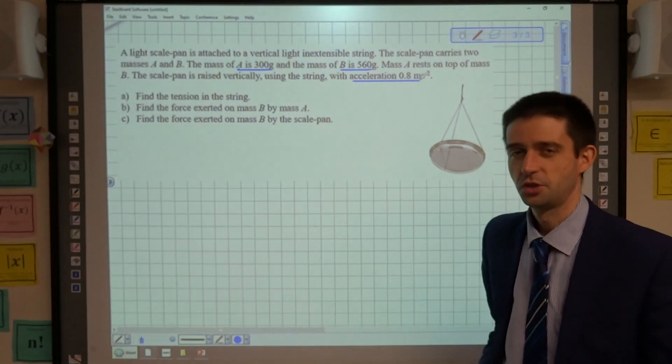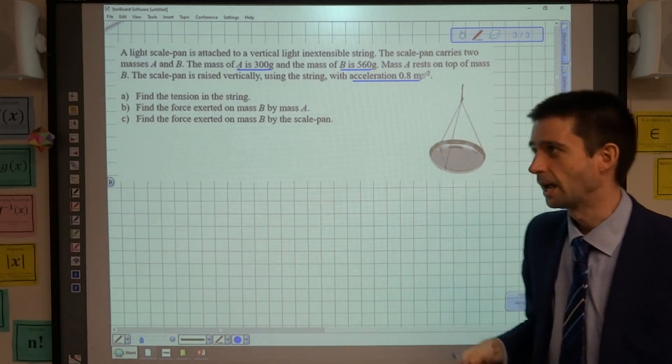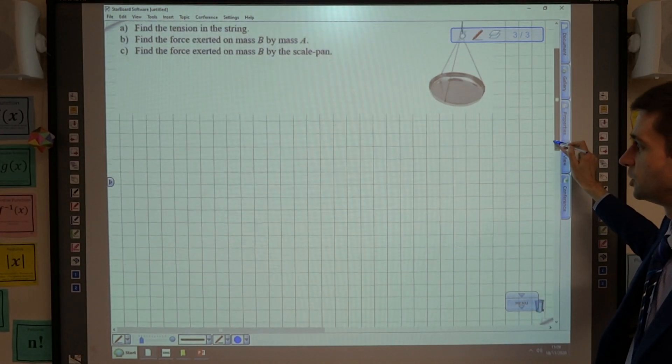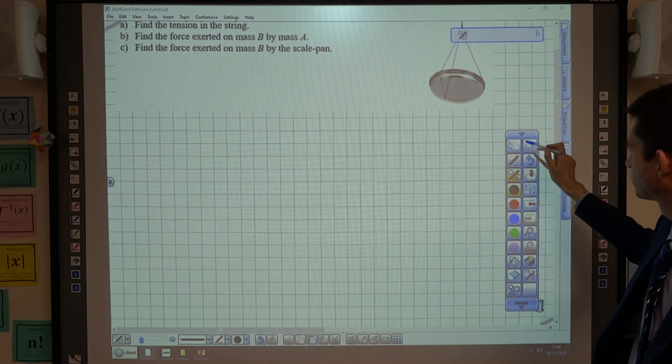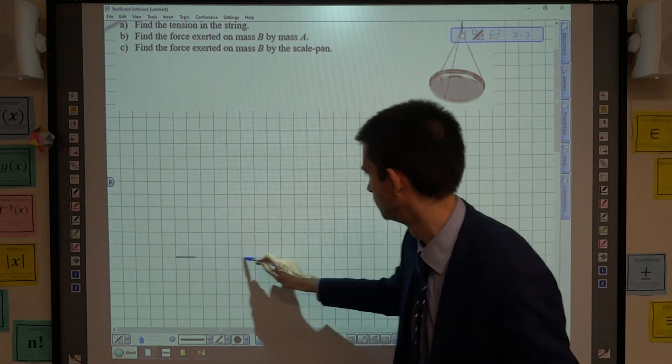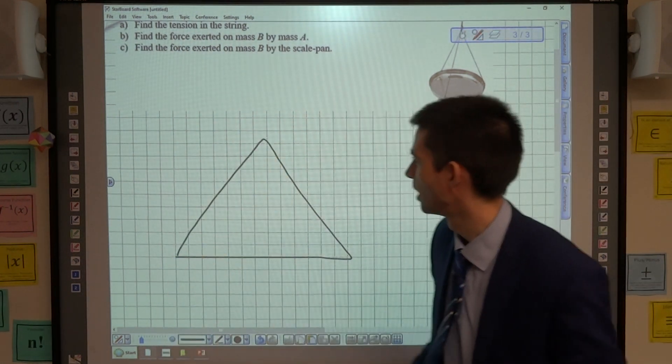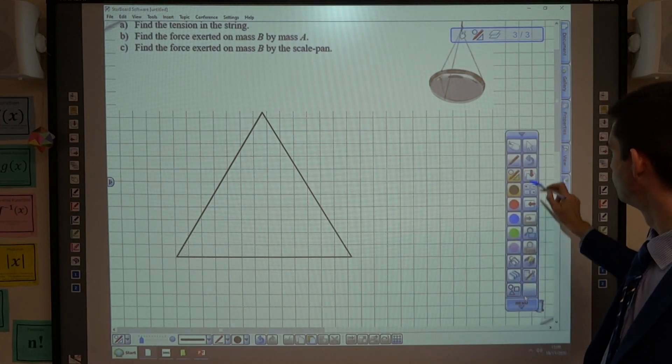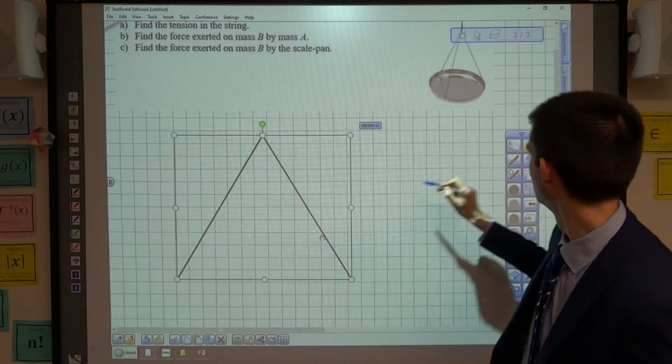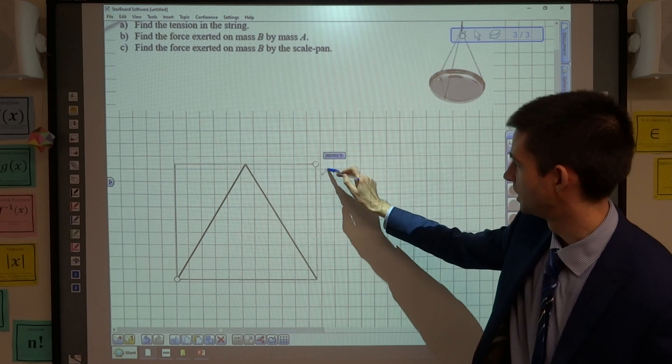The first thing we're being asked to do is to find the tension in the string. So the first thing I'm going to do is to draw a big diagram, I'm going to draw a big triangle to represent the scale pan, let's just resize that a little bit, there we go.